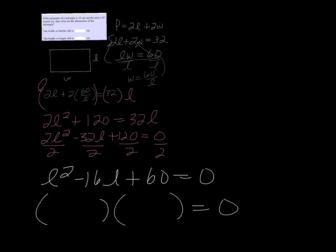So factor that. It's going to be l and l, and then the inside, let's see, multiply 60, we want multiples of 60 that add up to negative 16, so we know they're both going to have to be negative.